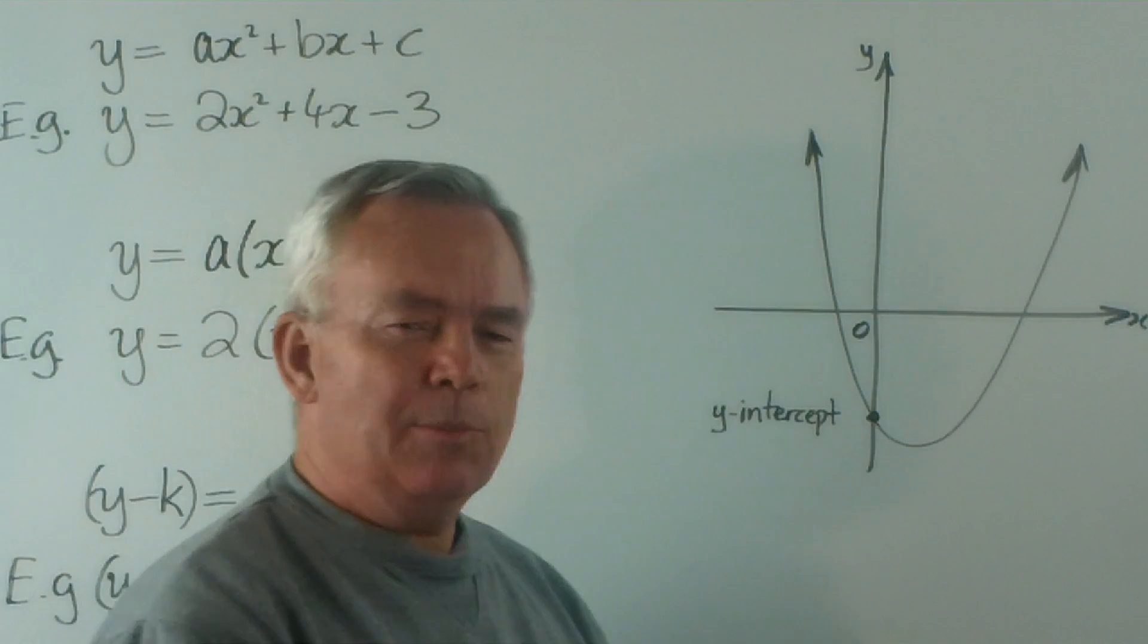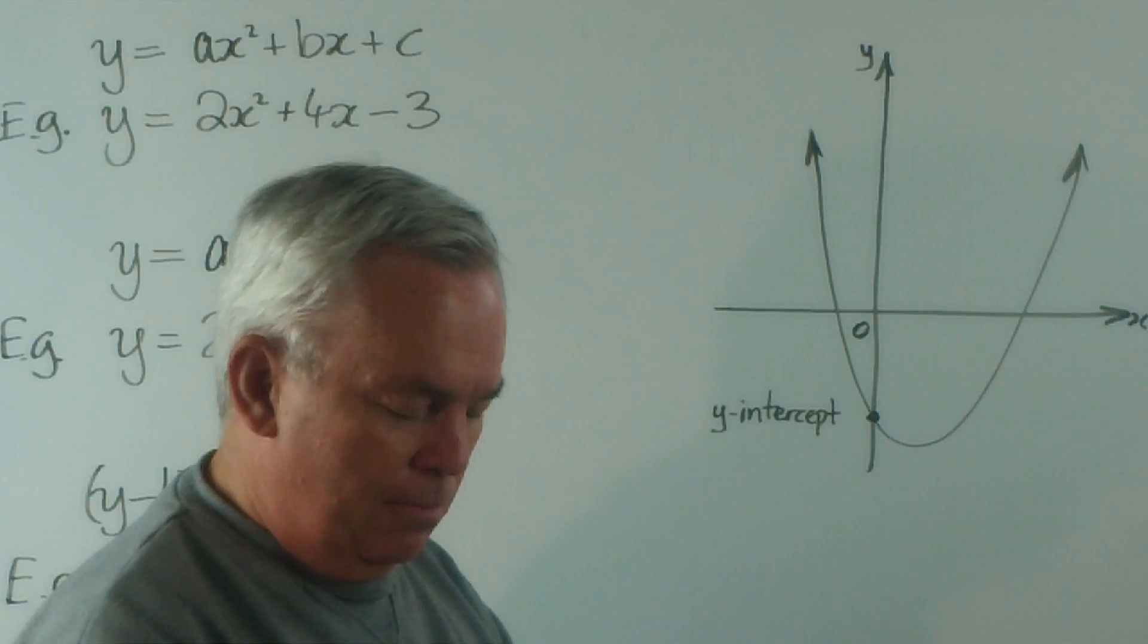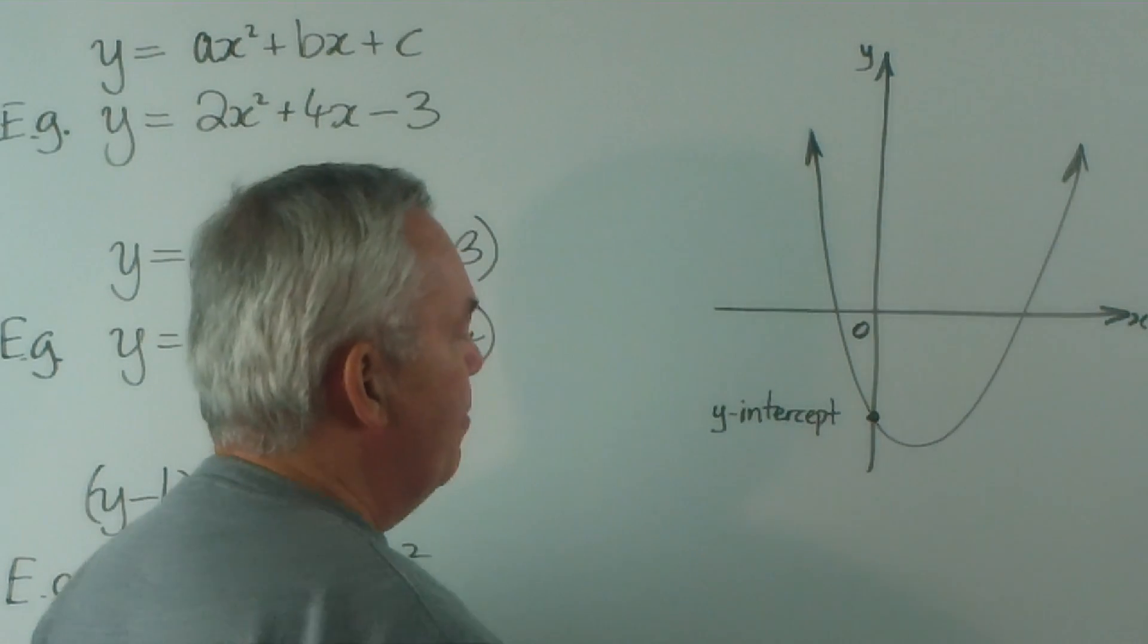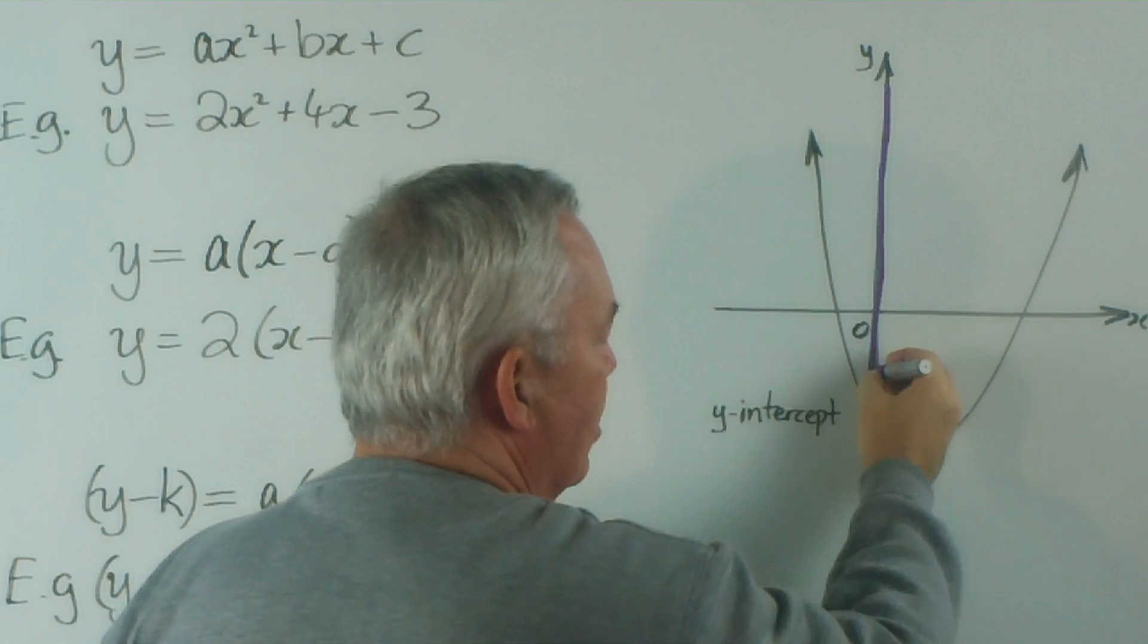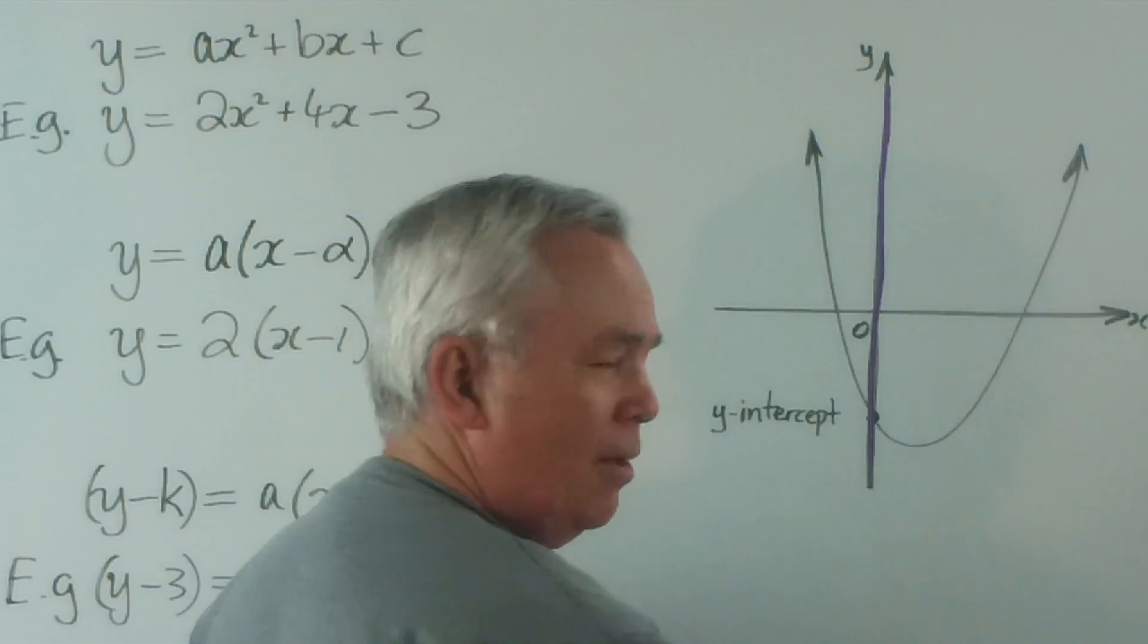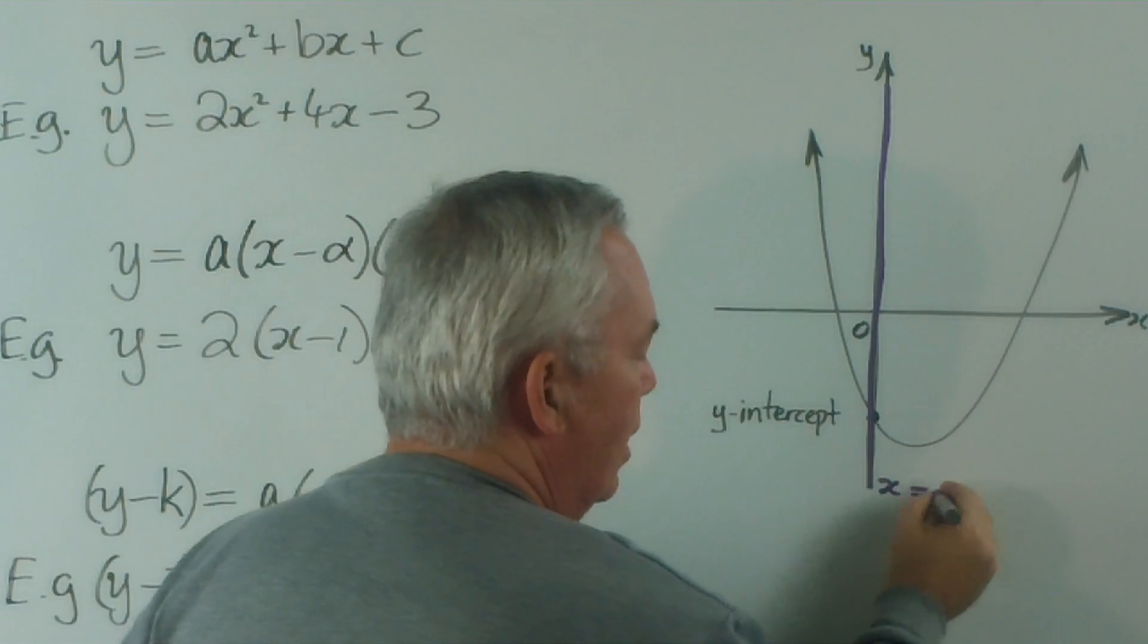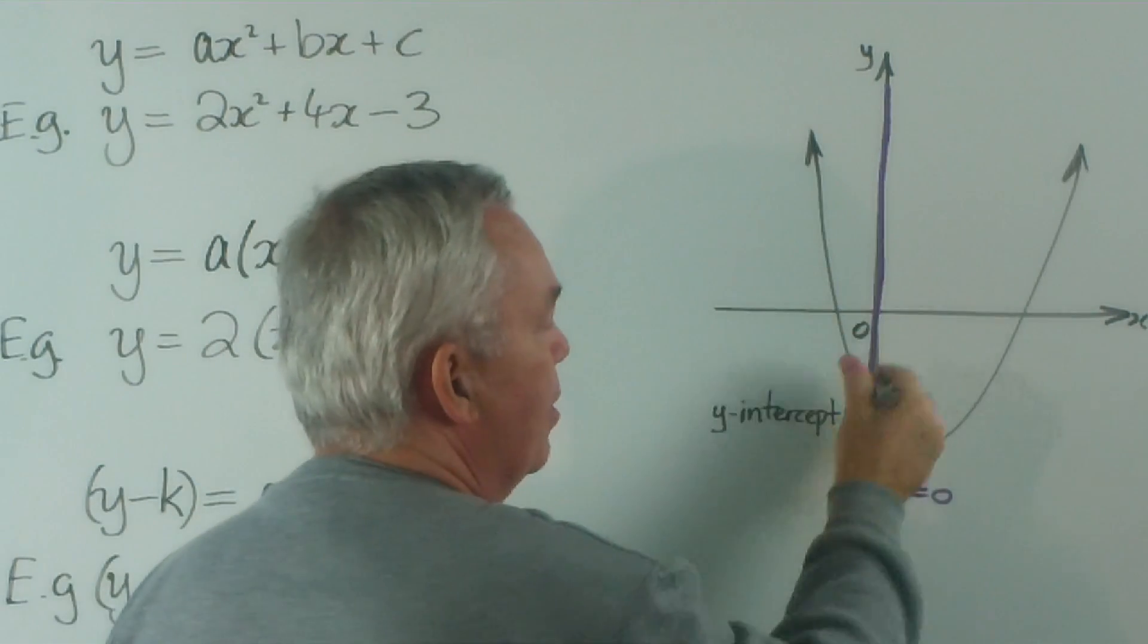Now, the principle for finding the y-intercept is profoundly simple: it is simply substitution. This particular line, the y-axis, has an equation, and the equation is x equals zero. Everywhere along this line, the x-value is zero.